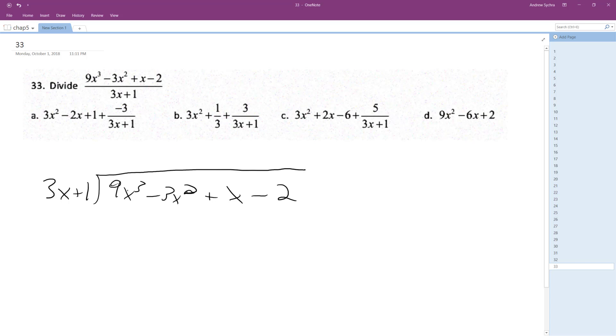So how many times is 3x? What do you have to multiply 3x by to get 9x squared? 3x squared. So we get 9x cubed and then plus 3x squared.